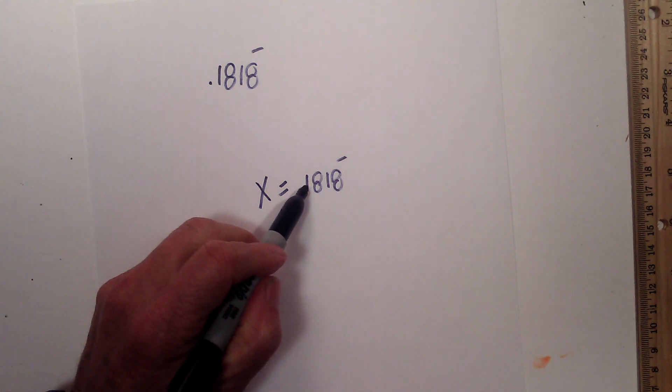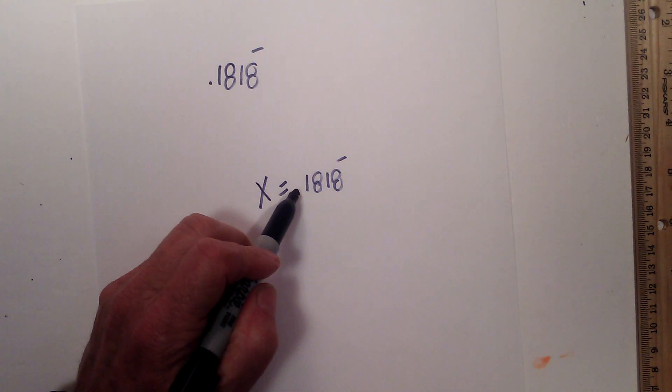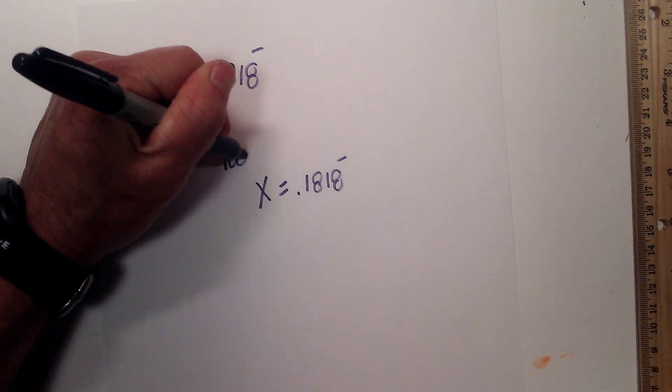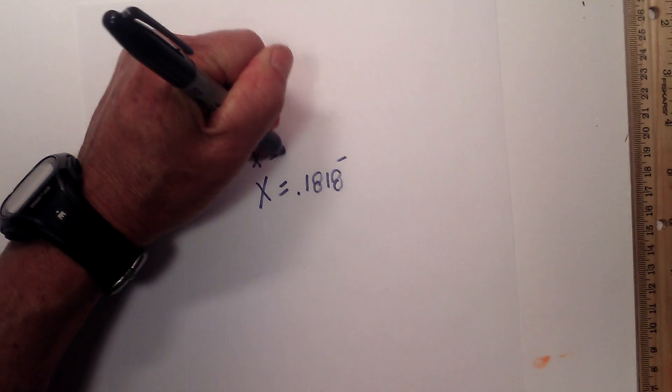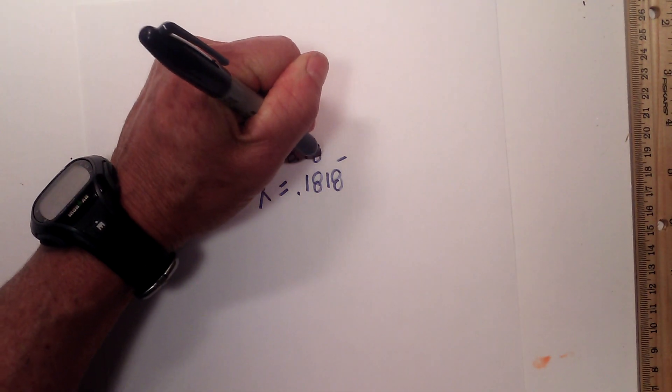Next, equation 2. I want the 1, 8, 1, 8 to the left of the decimal. So I have to move it 1, 2 places. So that is 100x is equal to 1, 8, 0.1818.